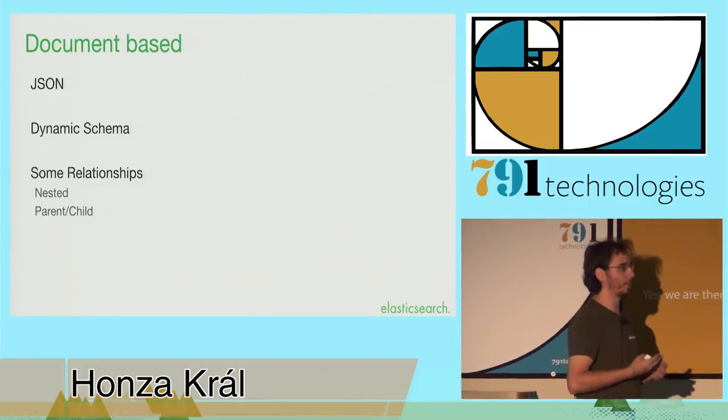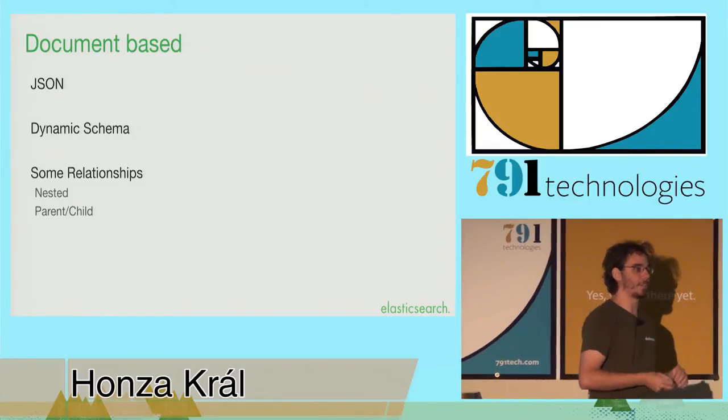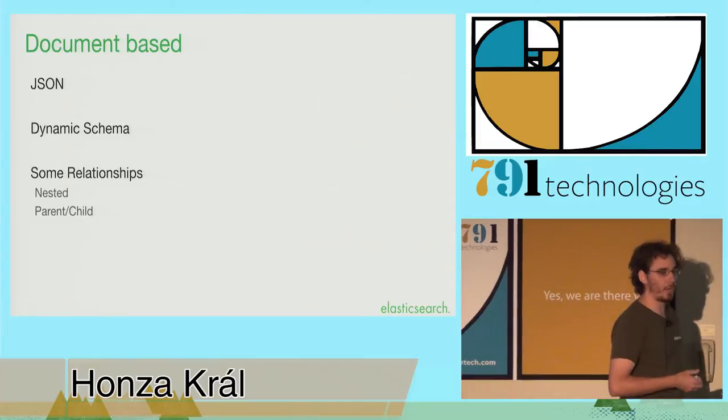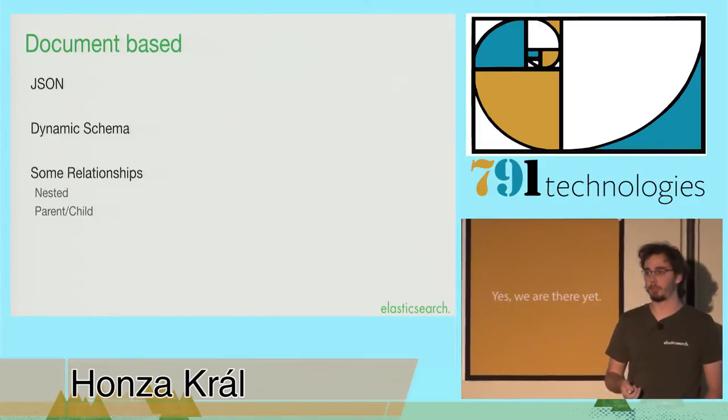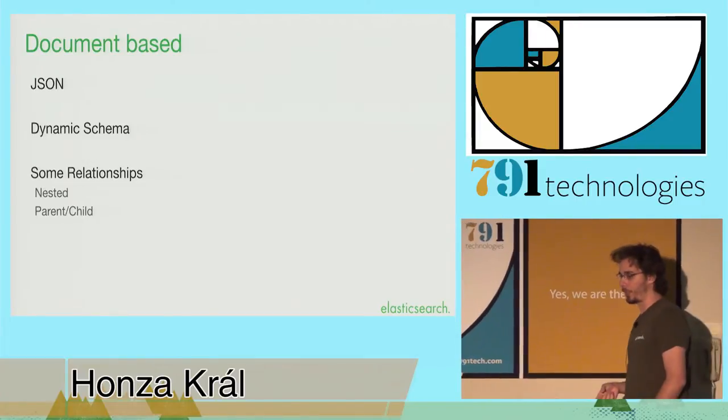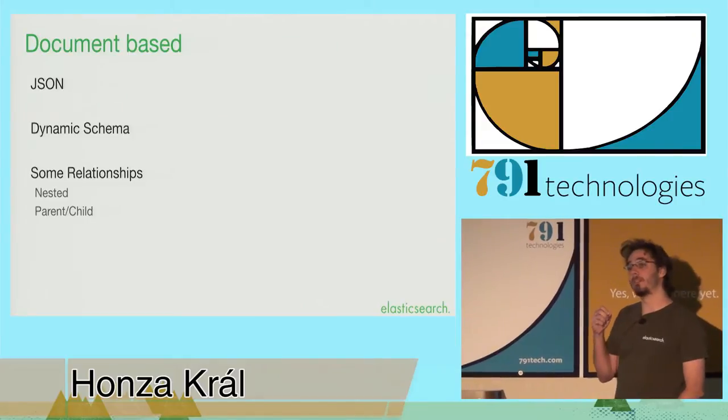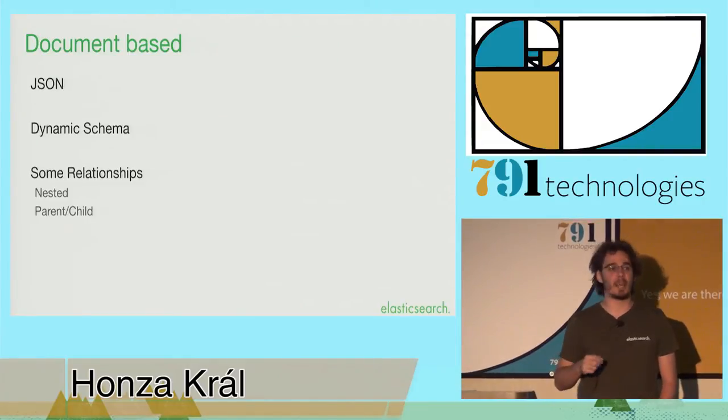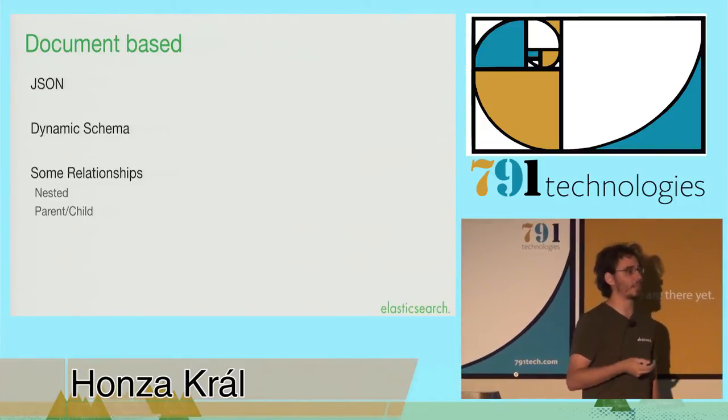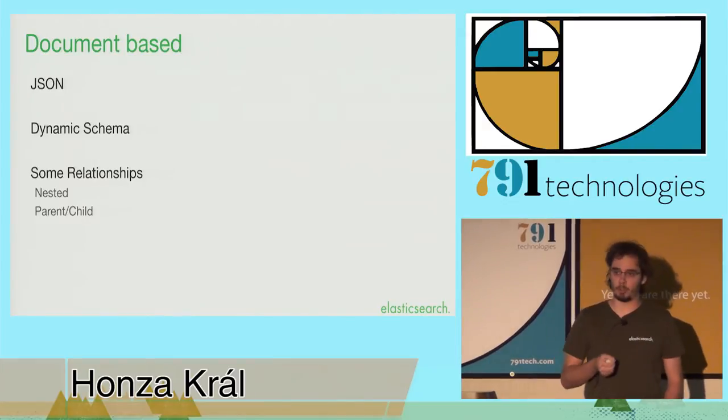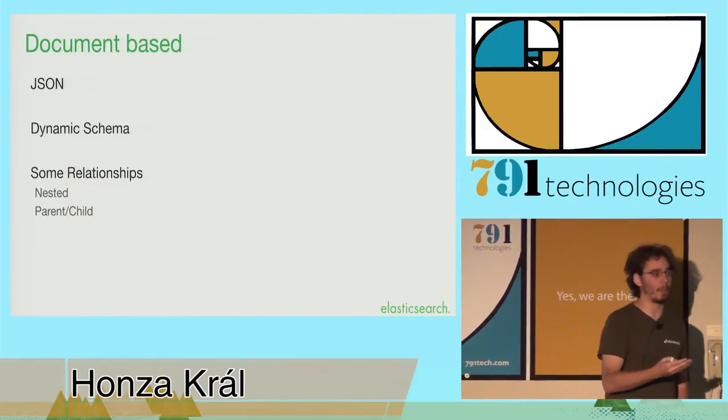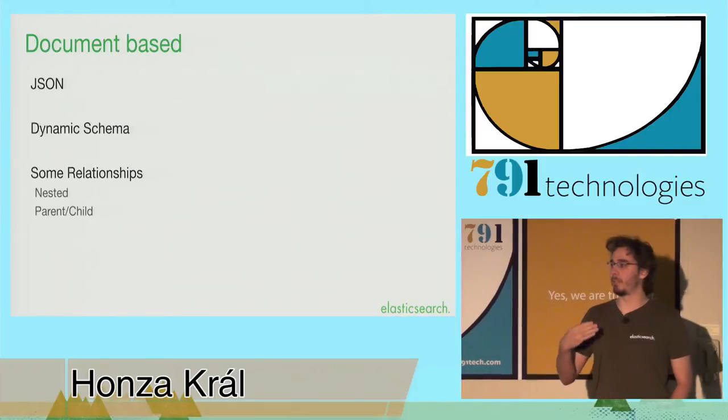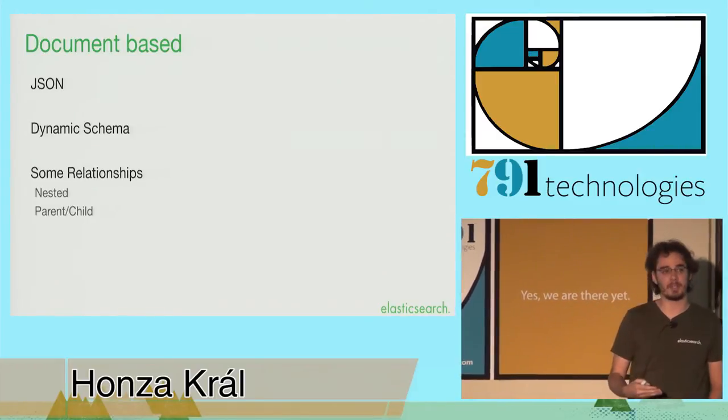As I mentioned, it's a document store. It's JSON-based, so anything that you can express as JSON, you can index and search through using Elasticsearch. It's not exactly schema-free, but it has a dynamic schema. What that means is you don't need to tell us what your documents look like. We'll look at them, and we'll infer the schema information from that data.